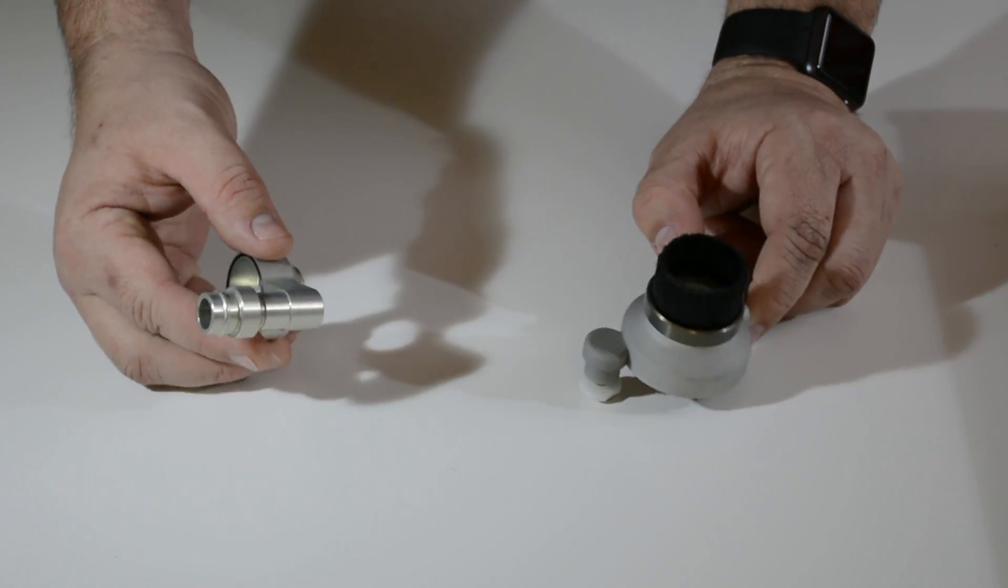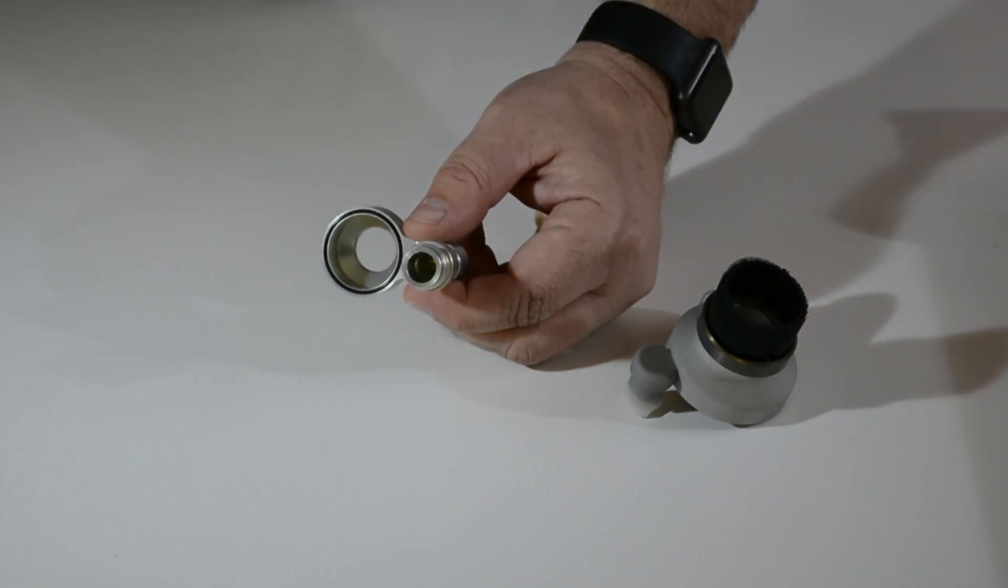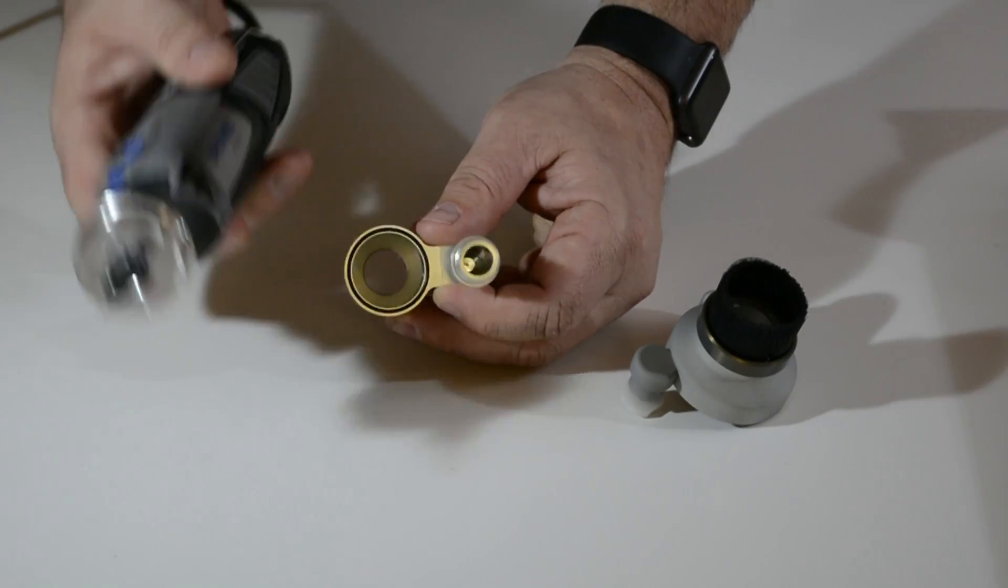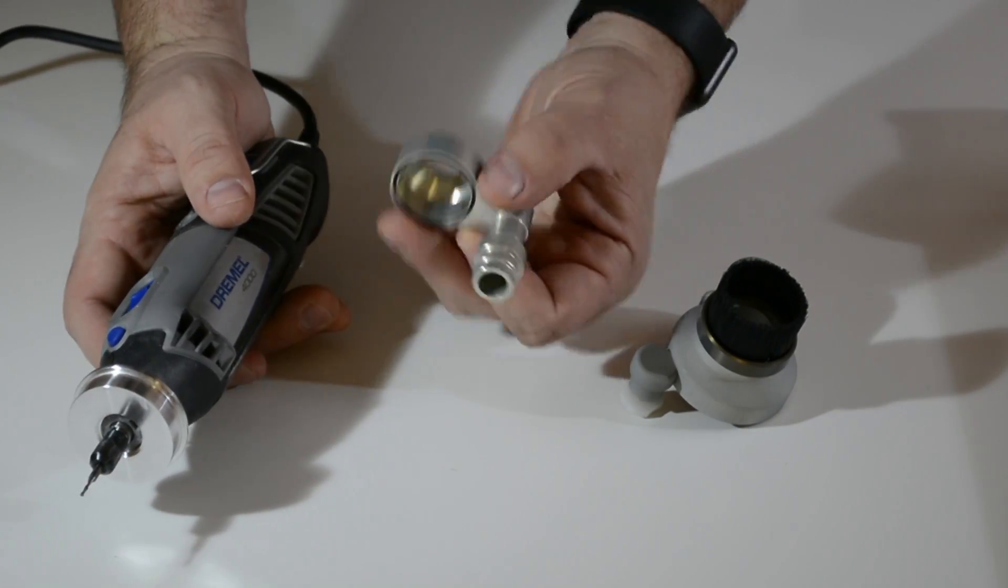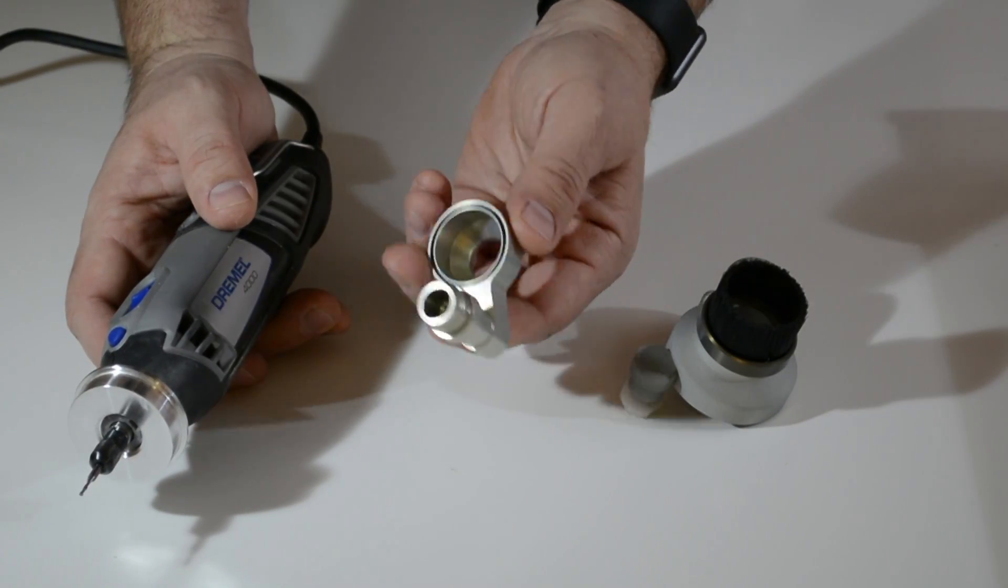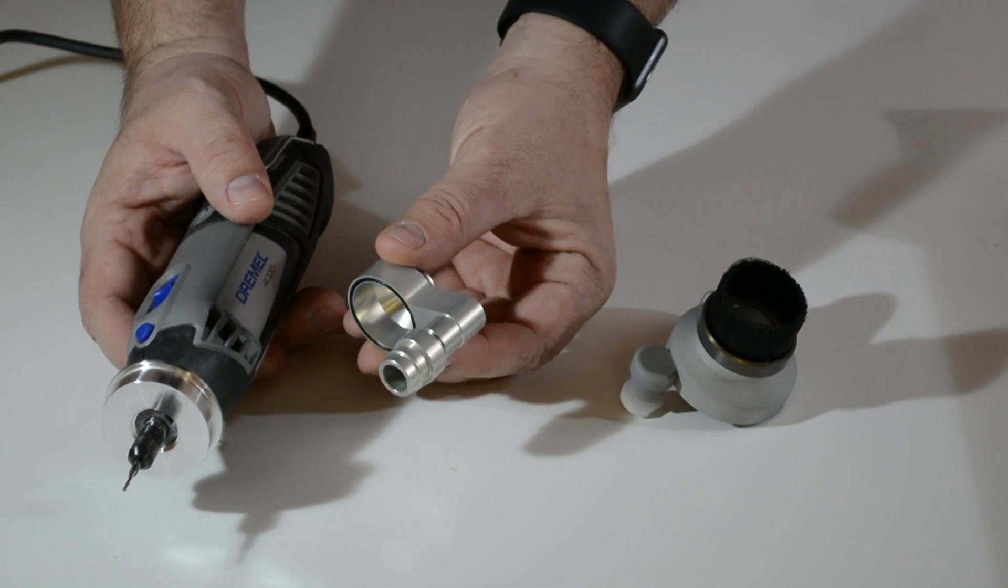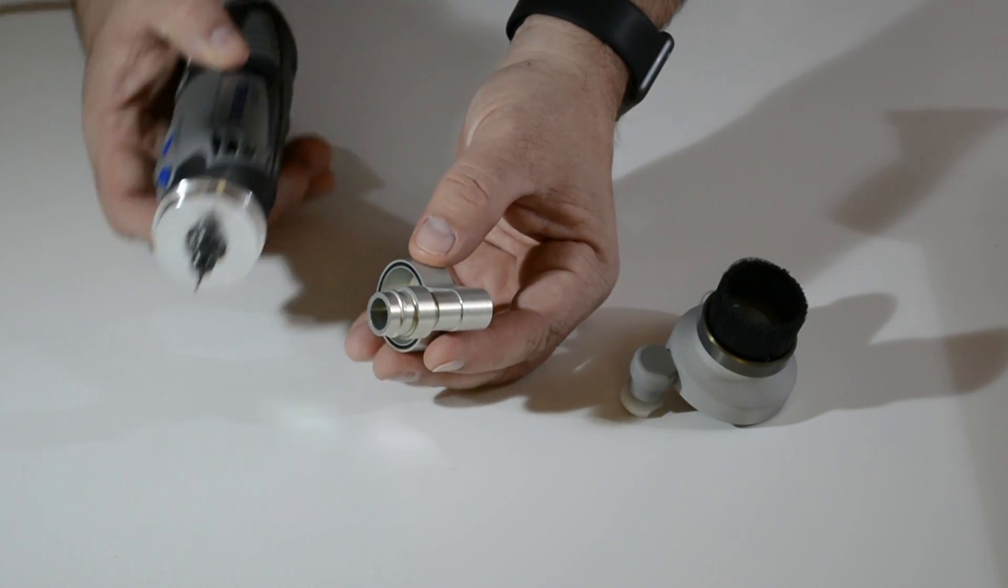Now if all you're planning on doing with your Stepcraft machine is using a Dremel or Proxxon rotary tool as your spindle, then this adapter is about $30 less than the HF500 adapter and will work perfectly fine at removing the majority of the dust and debris that's created from your rotary tool.